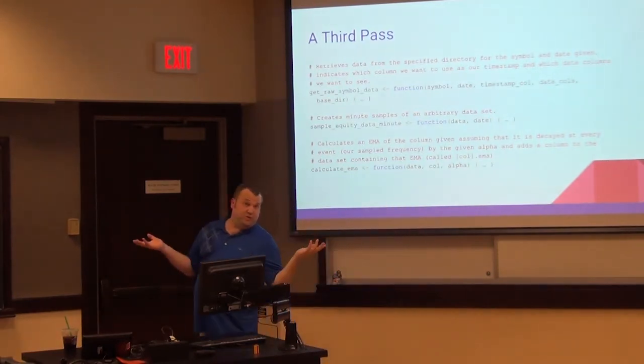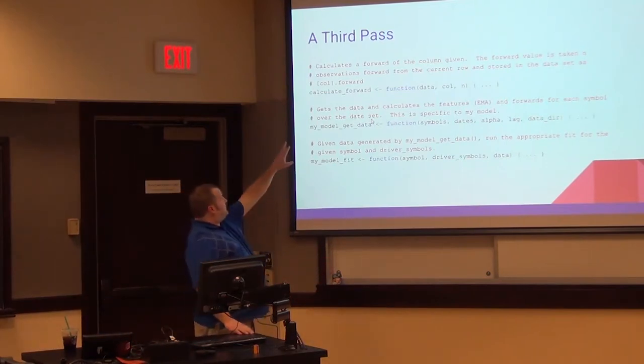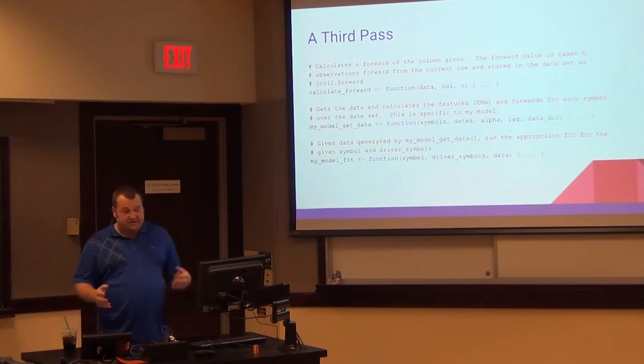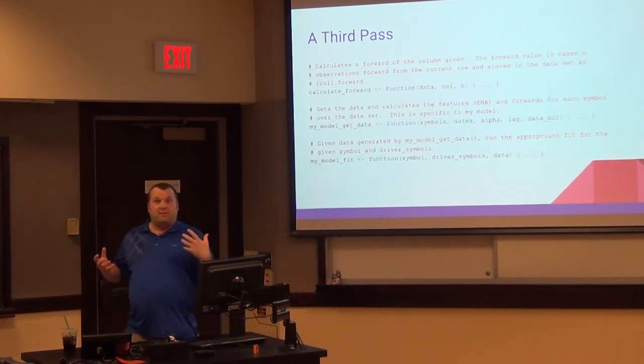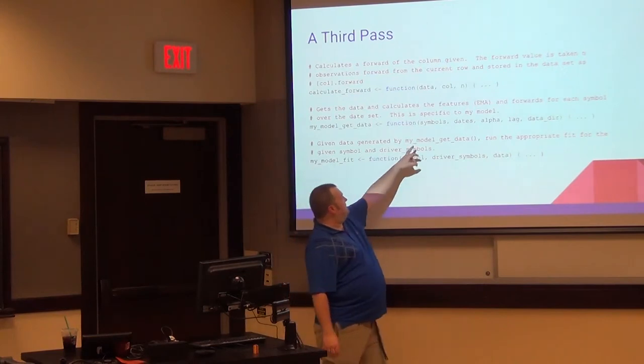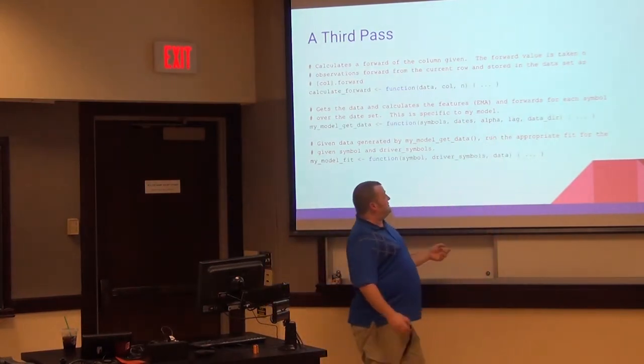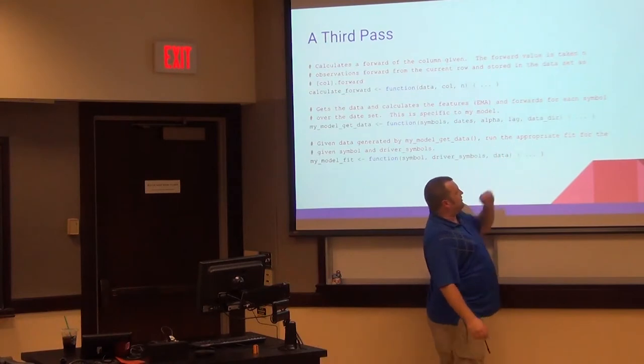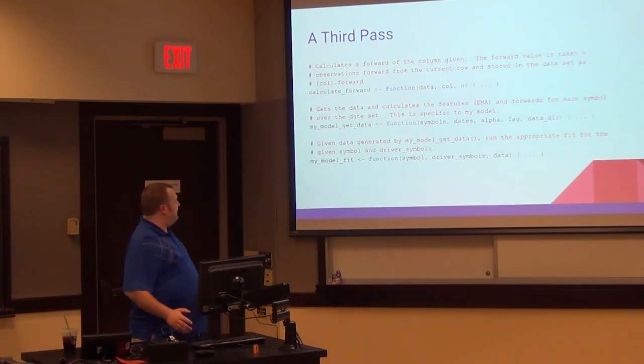And now we get to the feature generators. We're going to have a calculate EMA function. What this will do, we'll give it our data set as it stands that we return from get raw data. We'll tell it which column we want an EMA of and what the alpha, what alpha we want to use. And it will simply append a column to our data frame called whatever column was called dot EMA. We get that out of there. Calculate forward is a lot like, it's not really a feature, but it's kind of goes along with those derived data type of derived data that you would like to add to your data set. Then we create these functions, my model get data. So we can kind of encapsulate some of our model. For this particular model, it will call the functions previously to get all the data that we need. We pass in the symbols we want, the dates, because we want, because my model, I know I want EMA, so I'm going to pass an alpha in it. We're going to tell it the lag, which is essentially maybe poorly named, but how far in the future we're going to look, how many observations in the future we're going to look. And we'll give it the directory under which our data lives. It's a little more general than we had before.